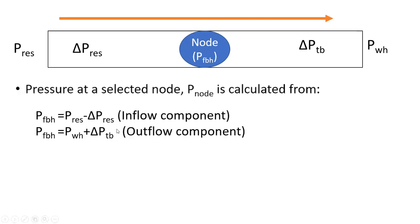Considering the inflow component — the reservoir component — to obtain the bottom hole flowing pressure, it is equal to the reservoir pressure minus the change in pressure that occurs in transit. For example, if reservoir pressure is 3,000 PSI and we subtract the change in pressure of 500 PSI, it gives us 2,500 PSI — the bottom hole flowing pressure. So to get the bottom hole flowing pressure, we take the reservoir pressure minus the change in pressure that occurs as the fluid flows into the bottom hole.